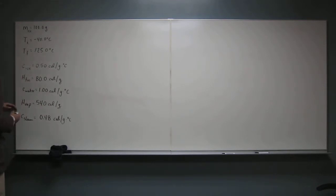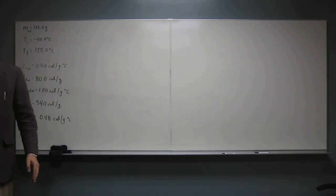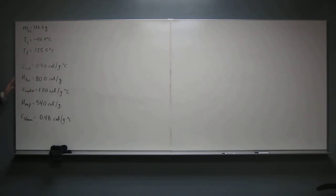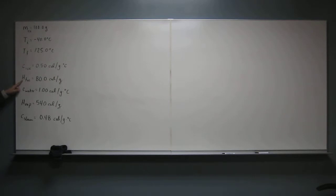First things first — I have all this other information written here. This information was not given to us in the problem; it's from that table given to us in the book. I don't want you to memorize this. If I want you to do a problem like this, I give you this information. So: C of ice — C is the specific heat. Heat of fusion is how much energy it takes to melt something. Heat of vaporization is how much energy it takes to convert liquid water into steam.